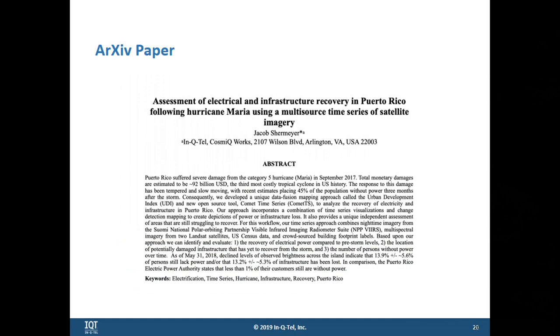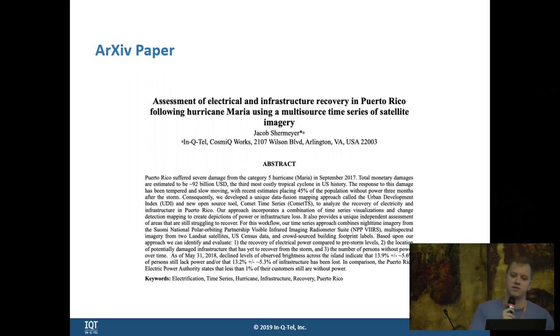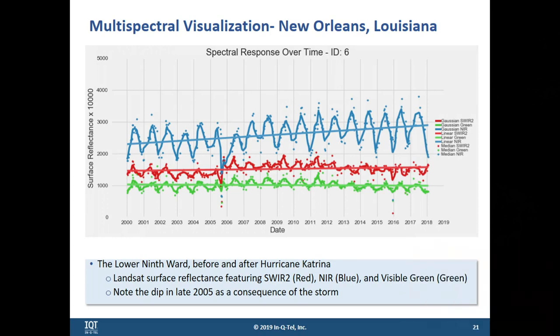If you'd like to read more about this, we have a paper out — it appeared in SPIE Remote Sensing last year and focuses on all the analysis I talked about. Comet also features multispectral visualizations. If you have multispectral data and want to work with it, I think that would be of great interest for this community. Here we're working with Landsat data — surface reflectance on the Y-axis and date on the X-axis — and you can see changes over time in the Lower Ninth Ward in New Orleans, with a major drop-off in 2005 as a result of Hurricane Katrina.